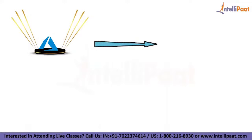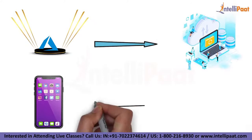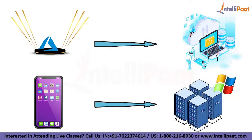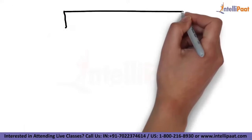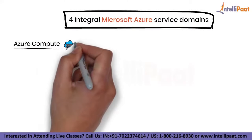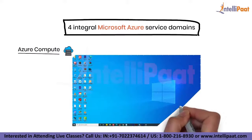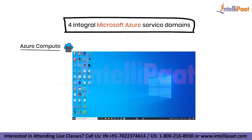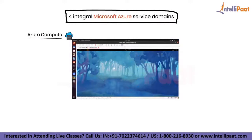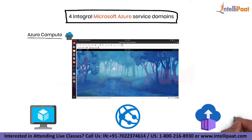Azure enables users to engage in agile cloud computing and is designed for creating and managing apps through Microsoft's data center. There are four integral Microsoft Azure service domains. The first one is Azure Compute, the most integral domain in Azure, bringing everything together with Azure virtual machines. You can get on-demand scalable compute resources. Azure virtual machines, app services, and container instances are some popular compute services.